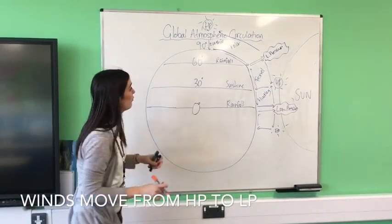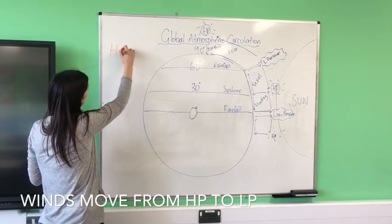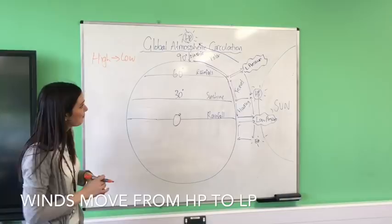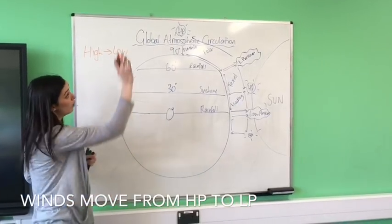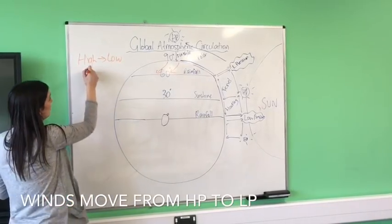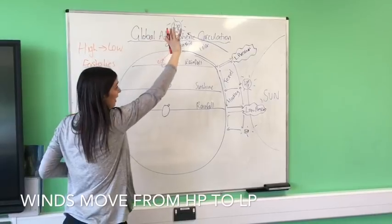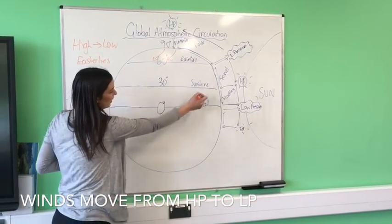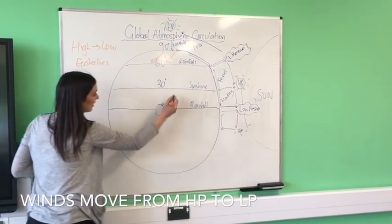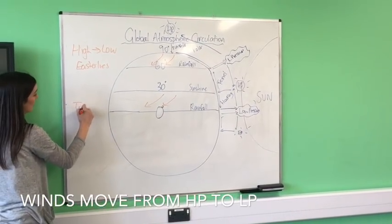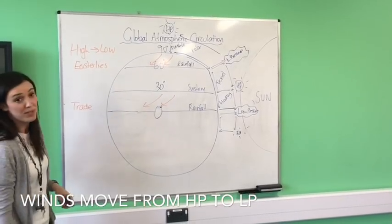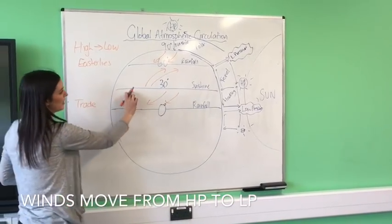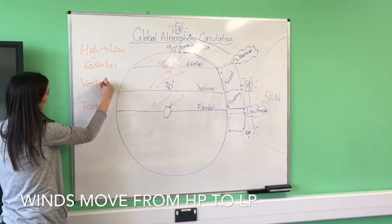Wind always blows from high pressure to low pressure - that's essential to remember. From 90 to 60, high pressure is at 90 so winds flow toward the low pressure at 60 - these are known as the easterly winds, named for the direction they come from. The Hadley cell produces the trade winds, blowing from high at 30 to low at the equator. The Ferrel cell produces westerly winds, from high pressure at 30 toward low pressure at 60.